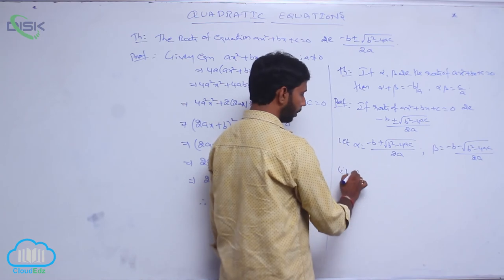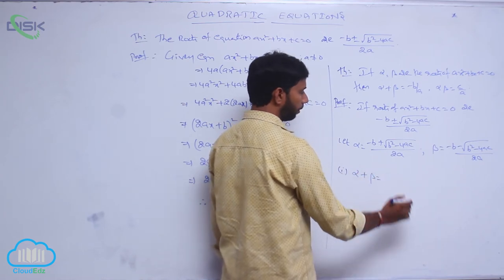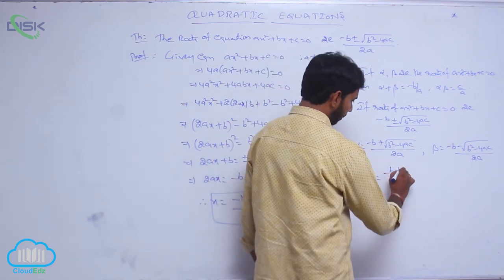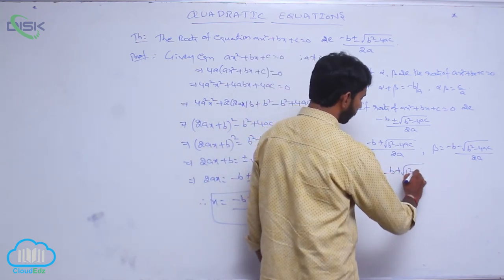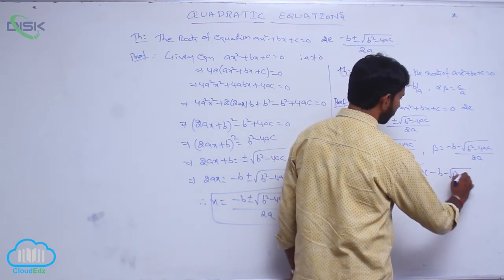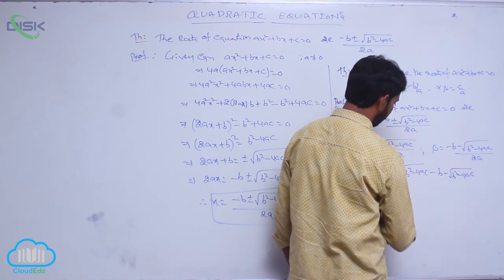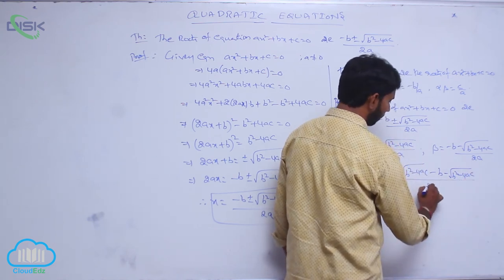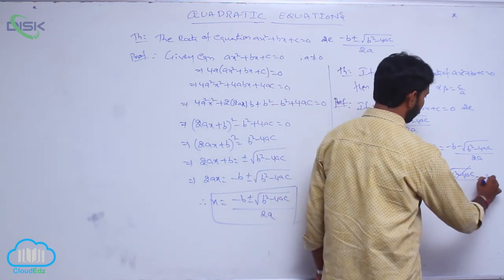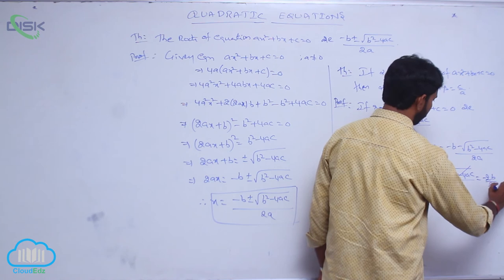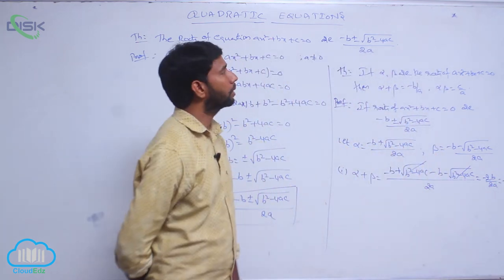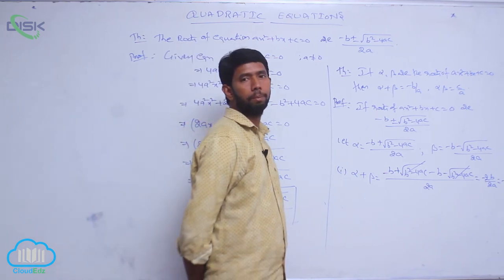Sum of roots: α + β = [(-B + √(B² - 4AC)) + (-B - √(B² - 4AC))] / 2A. Here the √(B² - 4AC) terms cancel, giving -2B / 2A = -B/A. So sum of roots α + β = -B/A.